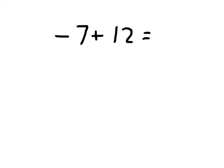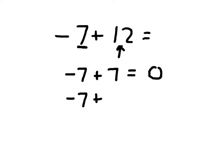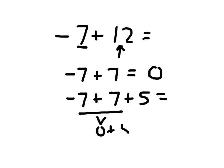Now in some instances, you have negative 7 plus 12. You'll notice that the 12 is bigger than 7 here. The inverse of negative 7 is 7, so negative 7 plus 7 would be 0. Negative 7 plus 12 is just negative 7 plus 7 plus 5. Negative 7 plus 7 is 0, plus 5, which equals 5. That's one way to simplify and solve it. If we add this bigger number, 12, to negative 7, we end up with a positive number, as opposed to our previous examples where we ended up with negatives.